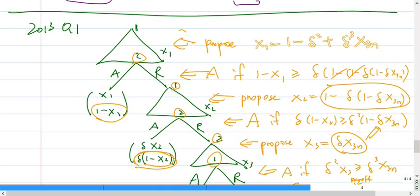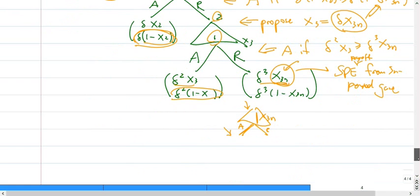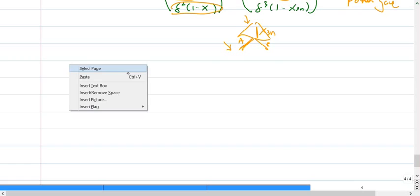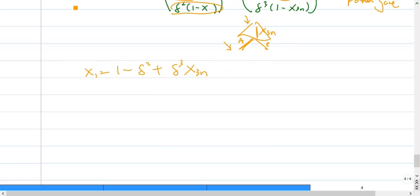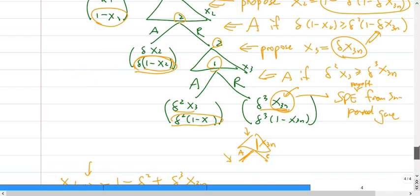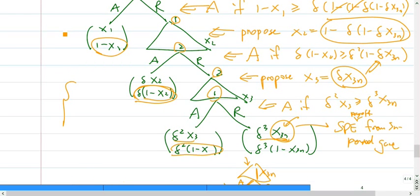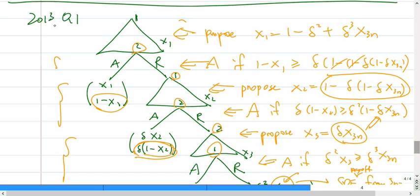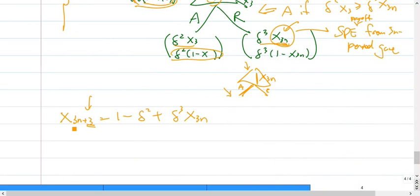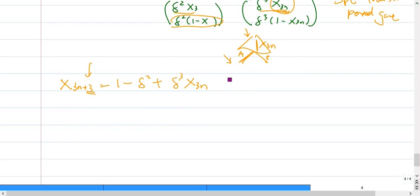Now we copy this thing and then solve this recursive relation. What this really is, is that 3n plus 3. We have three new periods, so this is the one that's here. Period 1, 2, and 3. We added three periods. So we know that 3n plus 3 period x is equal to this thing. The problem now becomes how to solve this.